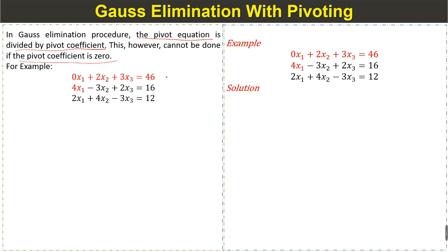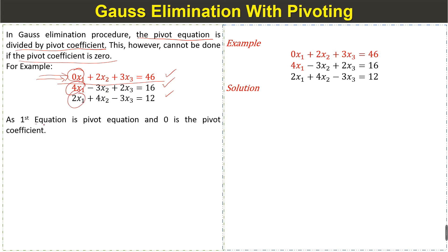For example, consider a system of equations where the first equation is the pivot equation and the pivot coefficient is 0. In this case, we cannot apply the Gauss elimination method directly because the pivot equation must be divided by the pivot coefficient to eliminate terms.